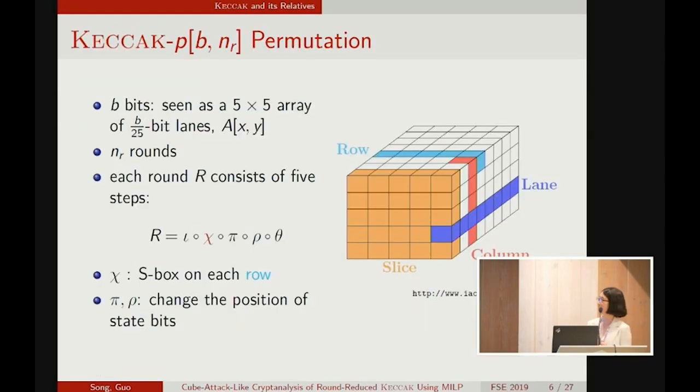Introduction to KECCAK-p. KECCAK-p has an internal state of b bits, which can be seen as a 5x5 array of lanes. It iterates a round function nr times. b and nr are two parameters for KECCAK-p.